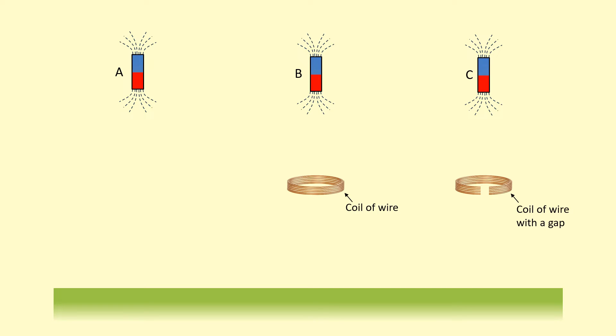So we have three bar magnets, A, B and C. B is on top of a coil of wire. C is on top of a coil of wire with a gap in it. When I release these from rest, from the same height, which one is going to hit the ground first?